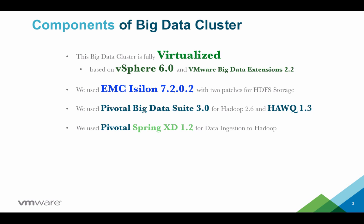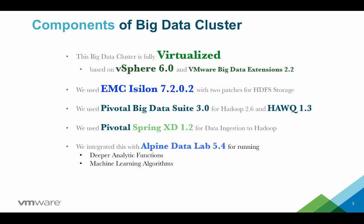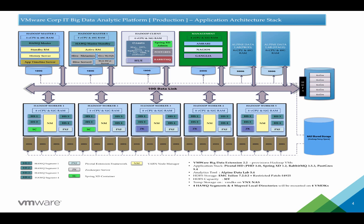For data ingestion, we used Pivotal Spring HD 1.2. For deeper analytic functions and machine learning algorithms, we are using Alpine Data Lab 5.4. For UI-based Hive and PQuery execution, we are using Hue 2.6. Here is the application architecture stack for VMware Corp IT Big Data Analytics platform.